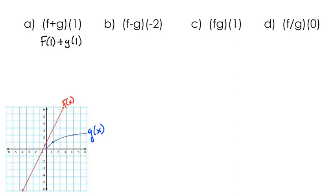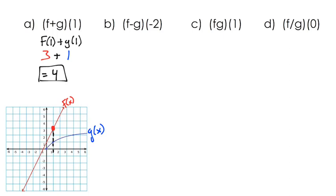When x is 1 on the graph, the f function has a value of 3 because the ordered pair (1, 3) is on the graph. For g of 1, looking at x equals 1, the ordered pair is (1, 1), so g of 1 is 1. So f plus g of 1 equals 3 plus 1, which is 4. Since we already have those values, for multiplication f times g of 1 we just multiply: 3 times 1 equals 3.